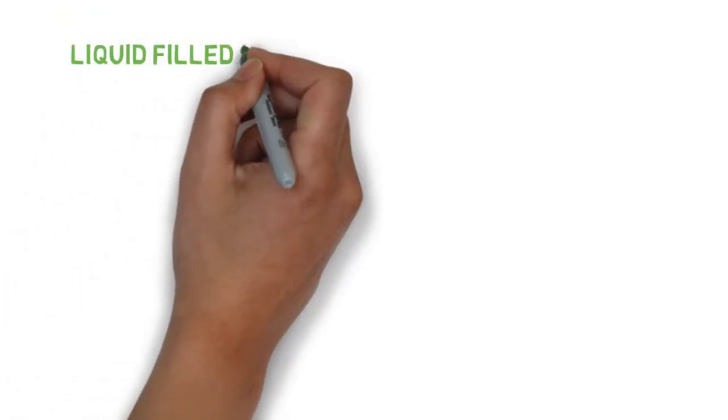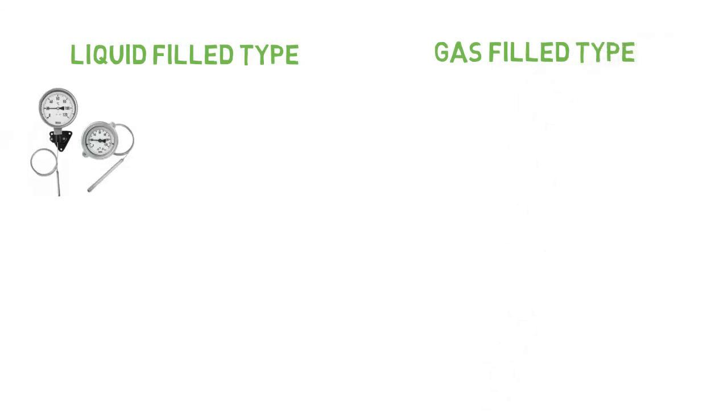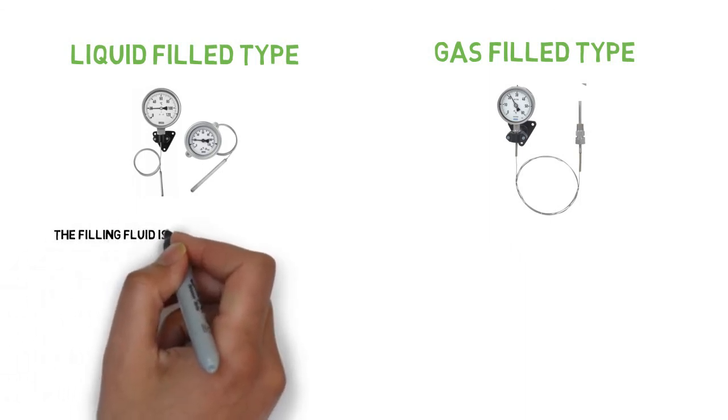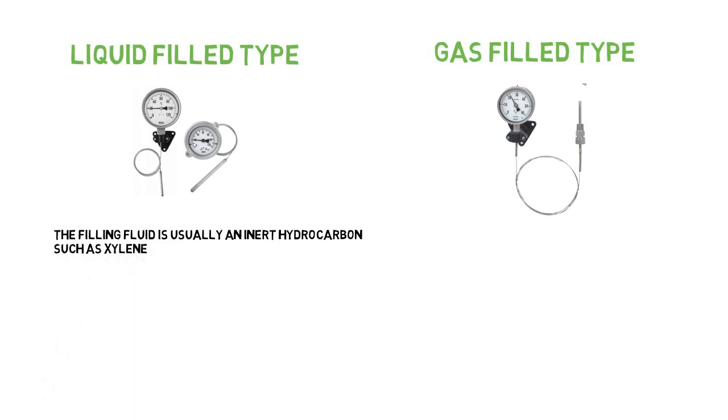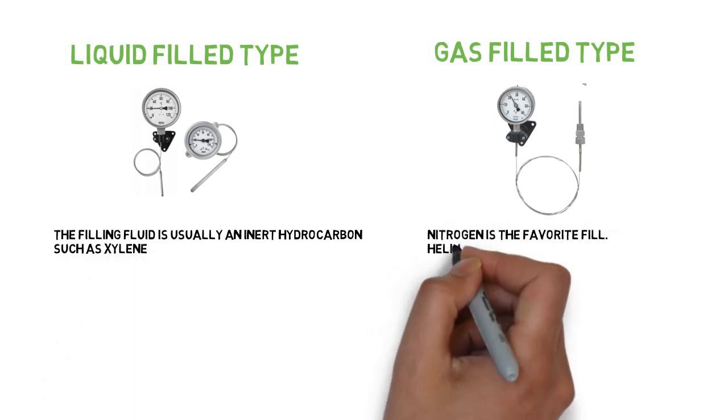Filled type system is further divided into liquid filled and gas filled type. The filling fluid is usually an inert hydrocarbon, such as xylene. Nitrogen is the favorite fill; helium is also used.